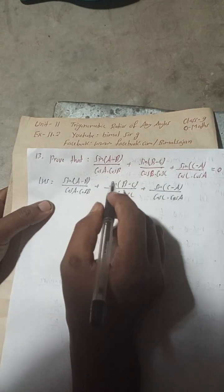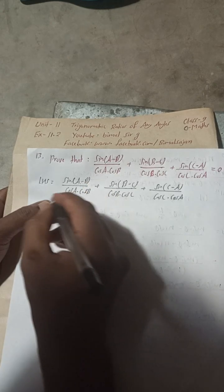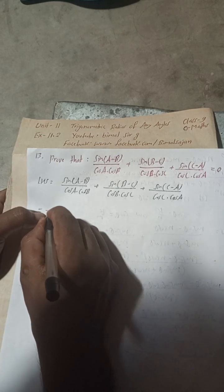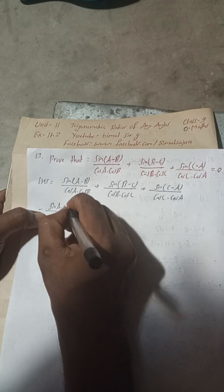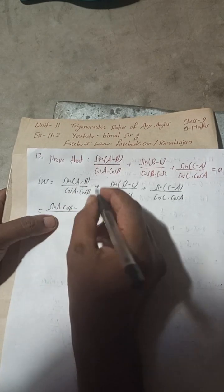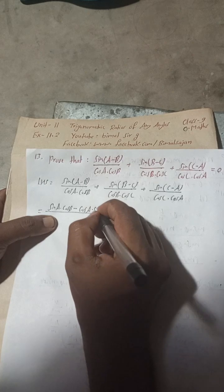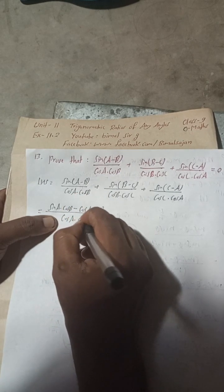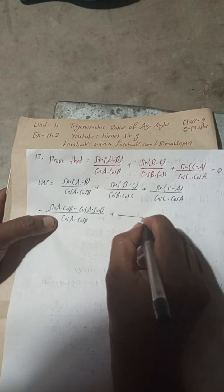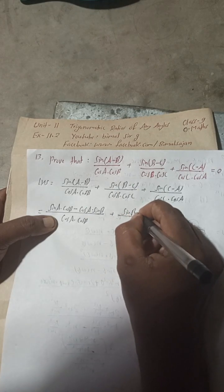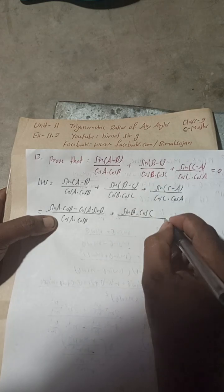Applying the sine subtraction formula, the first term sin(A − B) expands to: (sin A · cos B − cos A · sin B) / (cos A · cos B). For the second term, sin(B − C) expands to: (sin B · cos C − cos B · sin C) / (cos B · cos C).